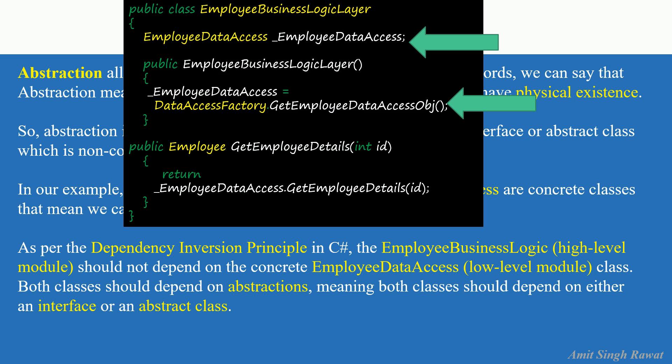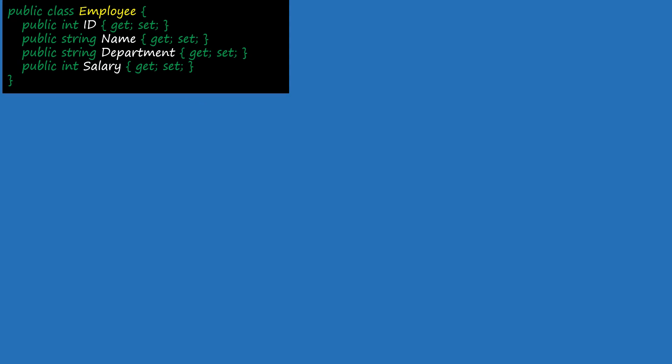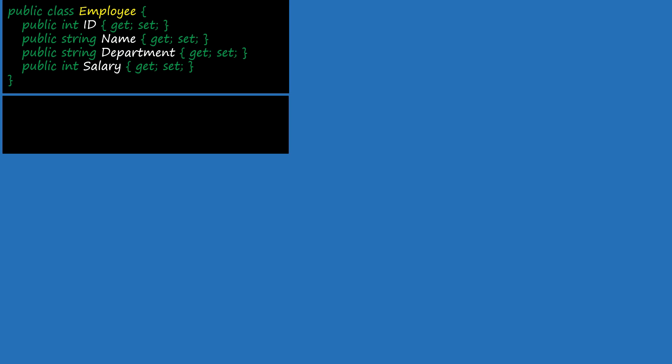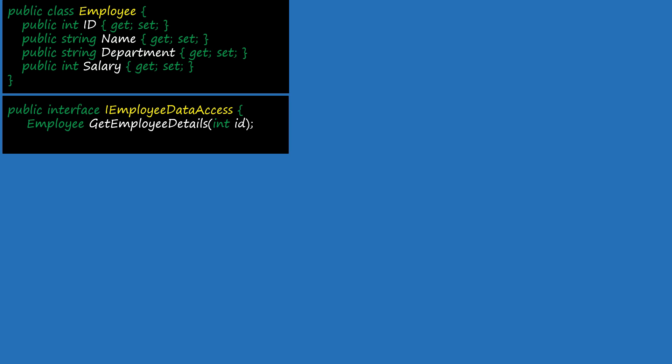Let's refactor our code to adhere to the Dependency Inversion Principle. The Employee class remains unchanged as it only holds employee data. Next, we need to implement abstraction. As discussed, abstraction is something non-concrete, which in programming means an interface or abstract class. So let's create an interface: public interface IEmployeeDataAccess. This interface has one method, getEmployeeDetails, with id as an input parameter and an Employee object as output. Our interface is ready and so is the abstraction.